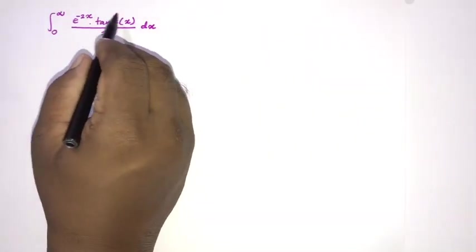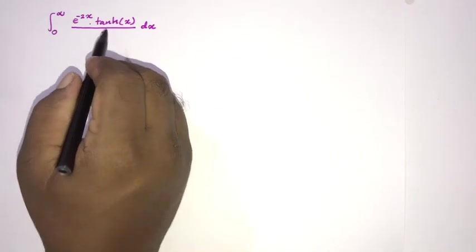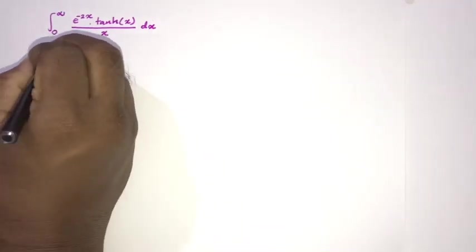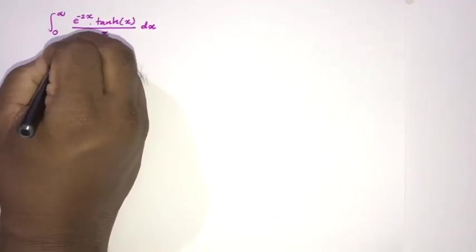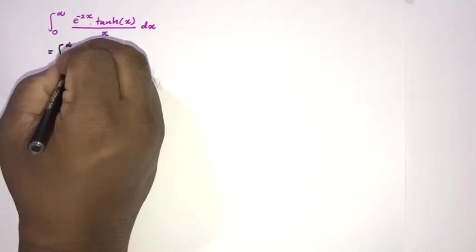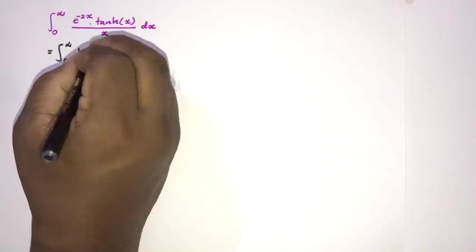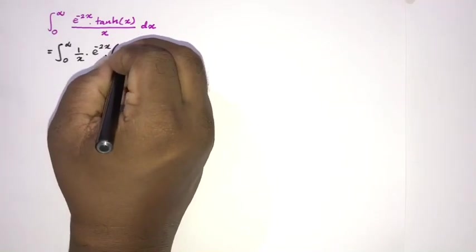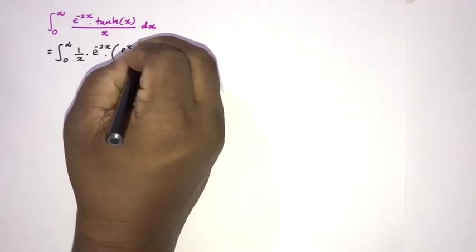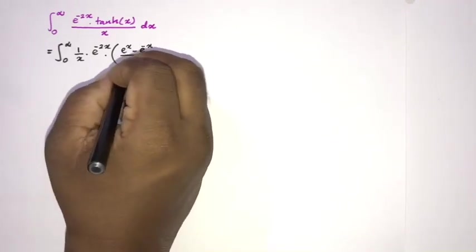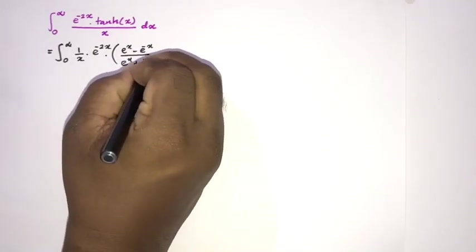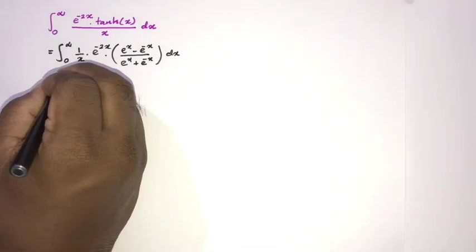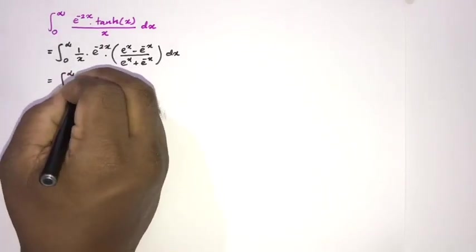First, instead of hyperbolic tan of x, we can write e to the x minus e to the minus x, over e to the x plus e to the minus x. Therefore, our integral equals the integral from 0 to infinity of 1 over x, times e to the minus 2x, times this expression, dx.